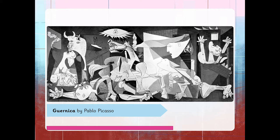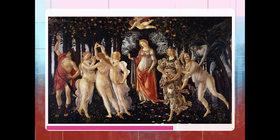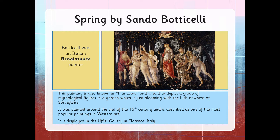Who's this beautiful lady? Have you seen a picture like this before? This is a beautiful painting which I was very lucky to actually have seen the real thing when I visited Florence on a school trip. This is called Spring Painting by Sandro Botticelli. Botticelli was an Italian Renaissance painter. This painting is also known as Primavera, which means spring, and is said to depict a group of mythological figures in a garden which is just blooming with the lush newness of springtime. It was painted around the end of the 15th century and is described as one of the most popular paintings in western art.